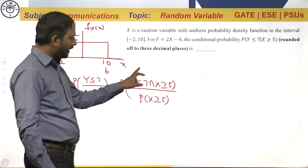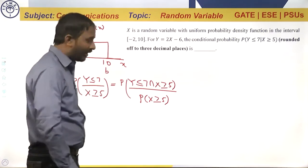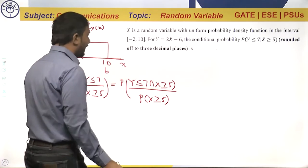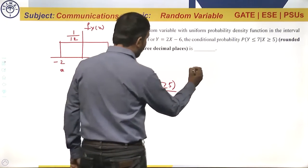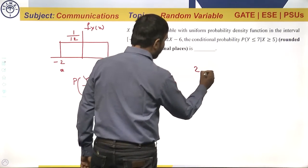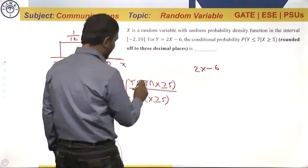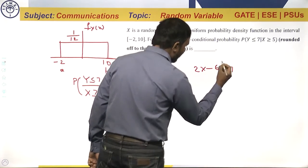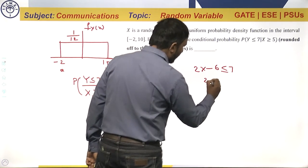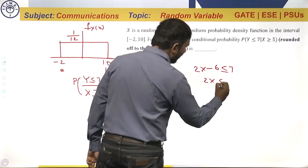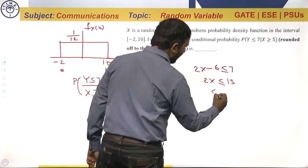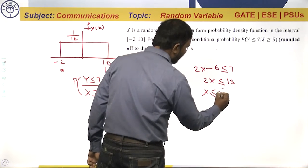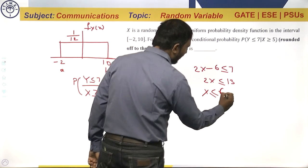Now let us convert y in terms of x. Since y is 2x minus 6, the condition y less than or equal to 7 becomes 2x minus 6 less than or equal to 7, or 2x less than or equal to 13, or x less than or equal to 6.5.